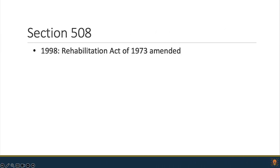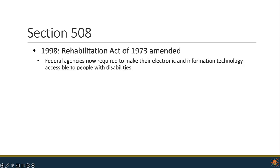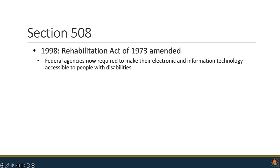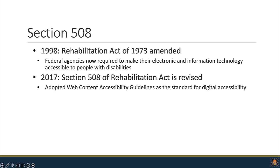A teeny bit of history: in 1998, the Rehabilitation Act of 1973 was amended to account for all things electronic — digital documents, web documents. Federal agencies in particular were required to make all these things accessible to people with disabilities. They updated this again in 2017. Section 508 is that piece of law in the Rehabilitation Act that relates to what we're interested in.